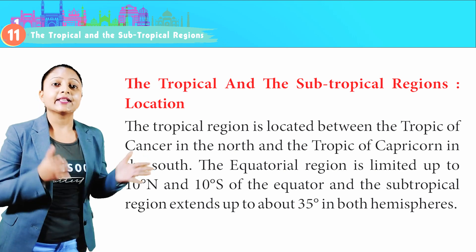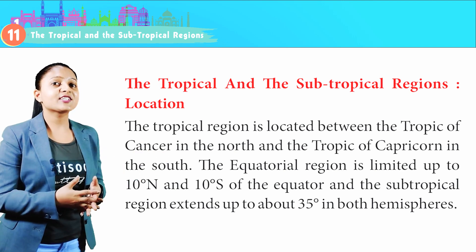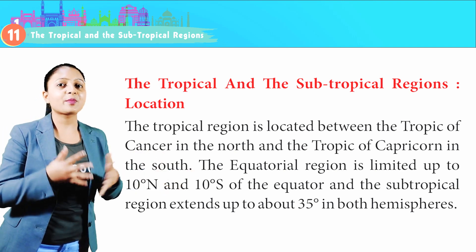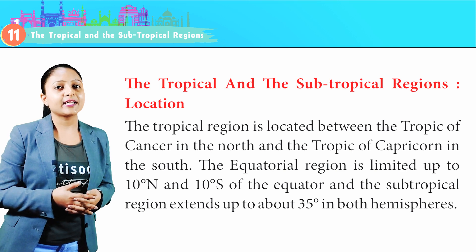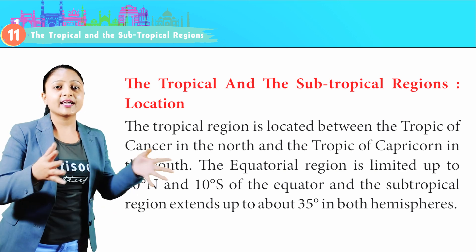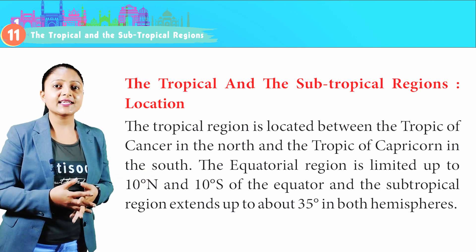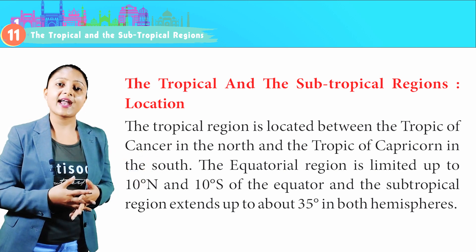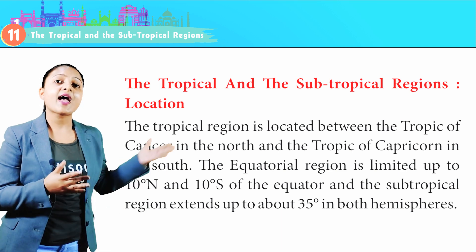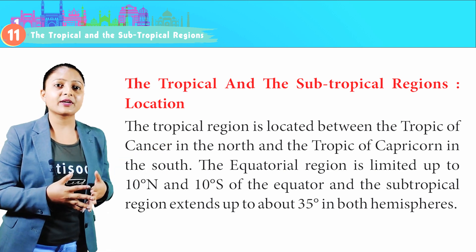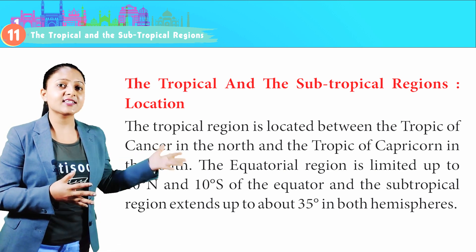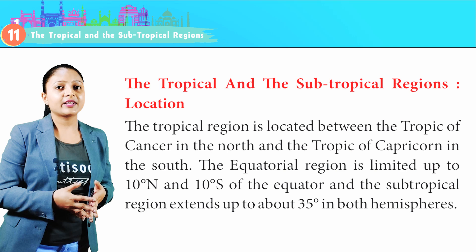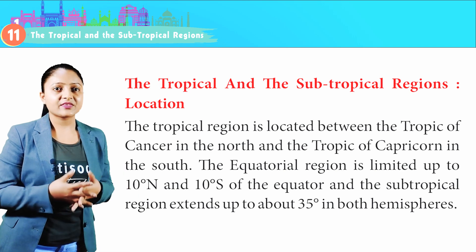Location: The tropical region is located between the Tropic of Cancer in the north and the Tropic of Capricorn in the south. The equatorial region is limited up to 10 degrees north and 10 degrees south of the equator, and the subtropical region extends up to about 35 degrees in both hemispheres.